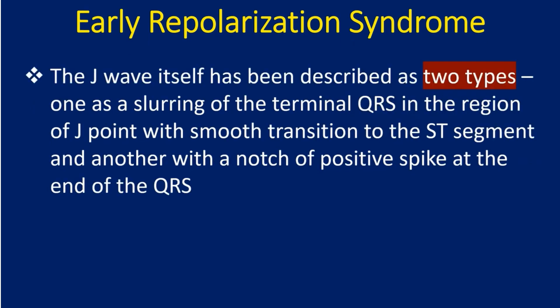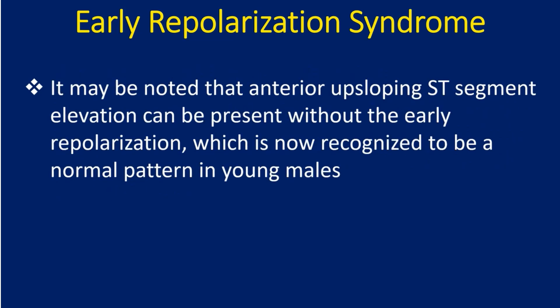The J wave itself has been described as two types: one as a slurring of the terminal QRS in the region of the J point with smooth transition to the ST segment, and another with a notch or positive spike at the end of the QRS. It may be noted that anterior upsloping ST segment elevation can be present without early repolarization, which is now recognized to be a normal pattern in young males.